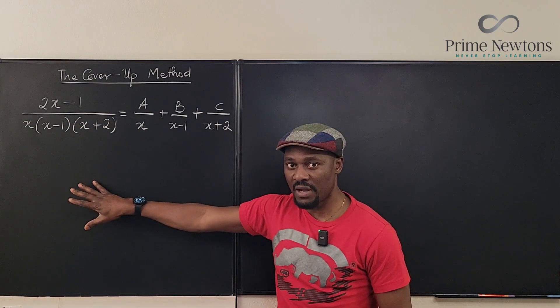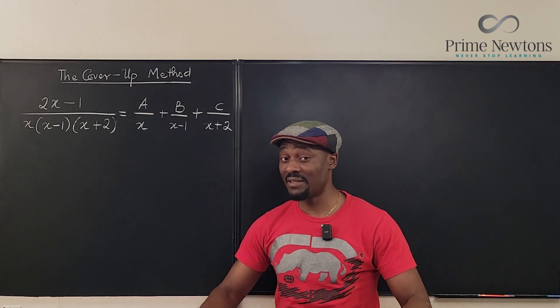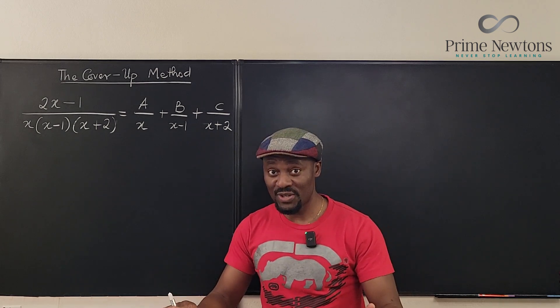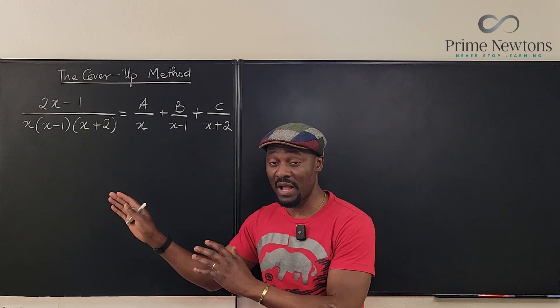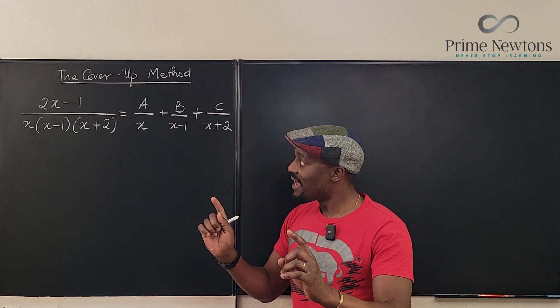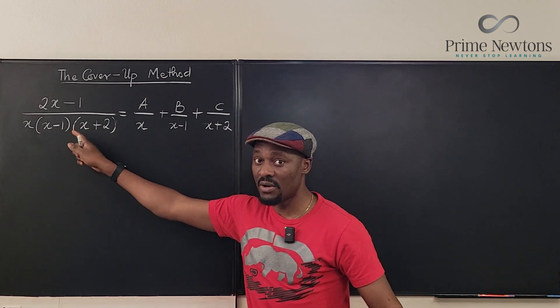Just by looking and covering stuff up. This method is called the cover-up method. It is the fastest method for breaking down any fraction into partial fractions. Any rational expression into partial fractions. If the factors in the denominator are linear.